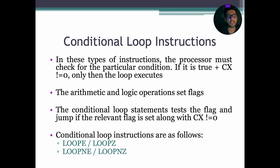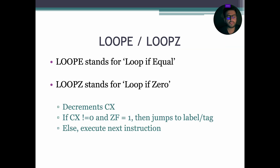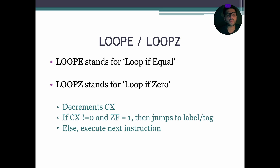LOOPE stands for loop-if-equal and LOOPZ stands for loop-if-zero. For both loops, the system first decrements CX, then checks if CX is not equal to 0 along with the zero flag status, which must equal 1. If both conditions are true, it jumps back to the label; otherwise the loop exits and the next instruction executes.